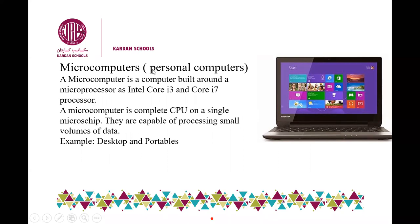Most of the time we refer to these as PC or personal computers. PC means personal computer — it's my own computer. We call it a PC because at one time, only one user can use it. A microcomputer is built around a microprocessor such as Intel Core i3 or Core i5. Intel is the company which creates these processor cores — Core i3, Core i5, Core i7 — these are all categories of microcomputers.